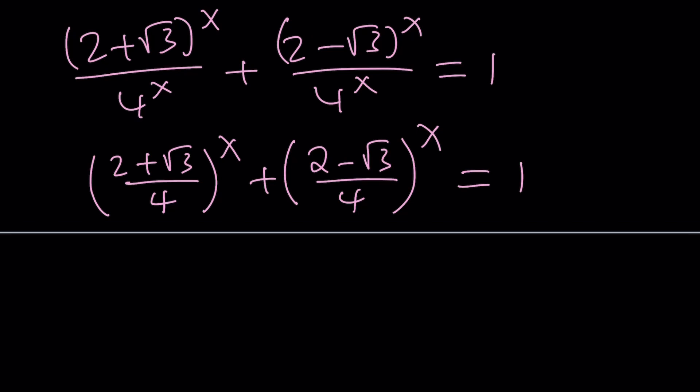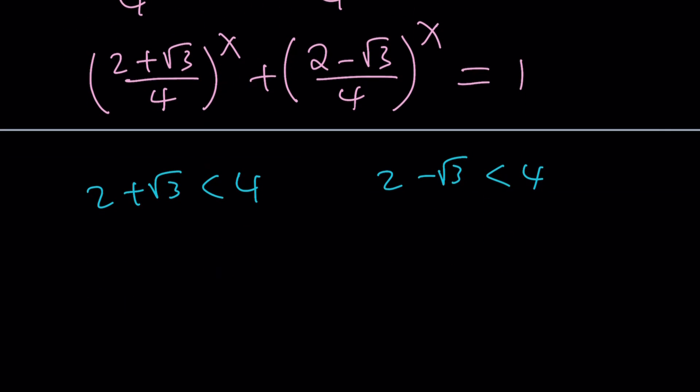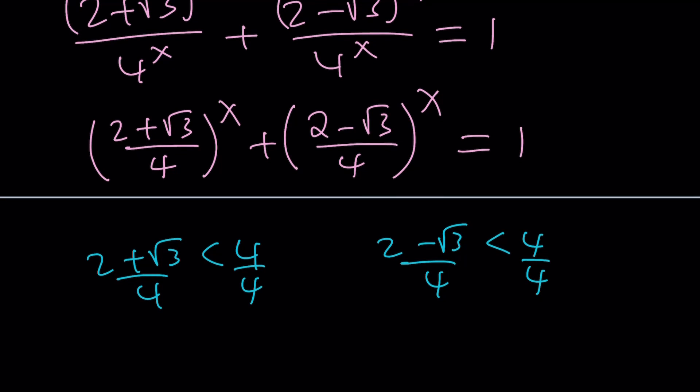Remember what I said about the comparison of the bases. I said that $2+\sqrt{3}$ is less than 4 because $\sqrt{3}$ is less than 2, and obviously $2-\sqrt{3}$ is less than 4. Well, it just means that if you divide both sides by 4 here, it means our bases are both less than 1. So that's important because now we did get a decreasing function. If you have two increasing functions or two decreasing functions on different sides, then you can do this trick and get a better picture.